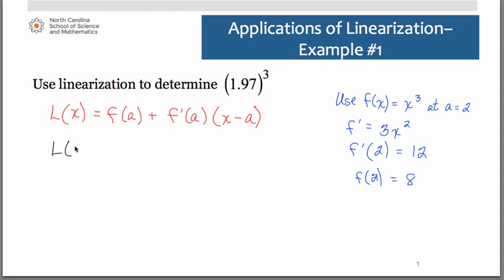So now we have everything to substitute into our linearization equation. Our linearization then states that L of x will be f of 2, so that was 8, plus f prime of 2, that was 12, times the quantity x minus 2. If you distribute and simplify that, you find that we have a linearization equation of 12x minus 16.